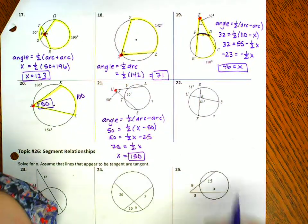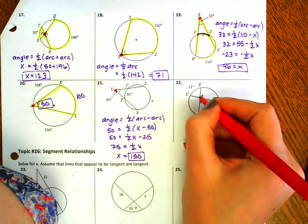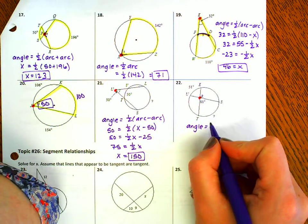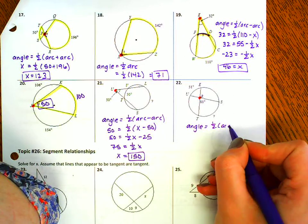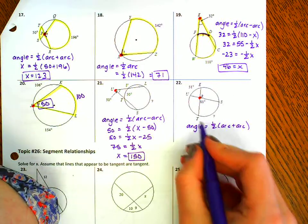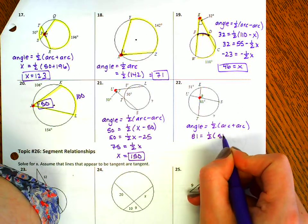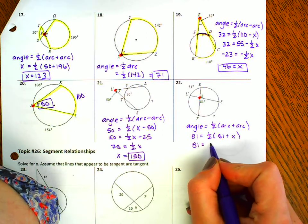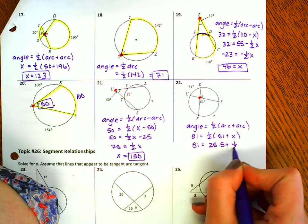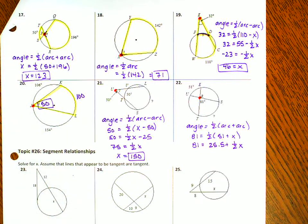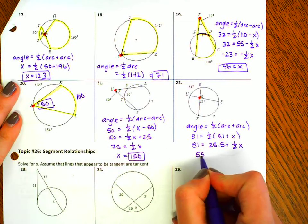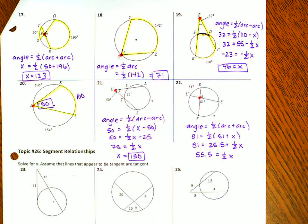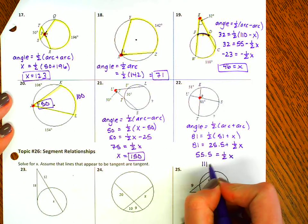Number 22 — I'm solving for this arc out here. This is an in-problem because the vertex is inside the circle. So angle equals one half arc plus arc. My angle is 81 degrees and my arcs are 51 and x. Distributing the one half gives me 25.5. Subtracting 25.5 on both sides gives 55.5 equals one half x. Multiplying both sides by 2 gives x equals 111.